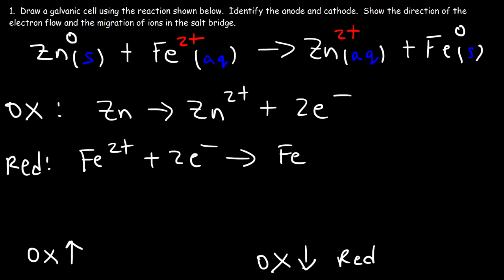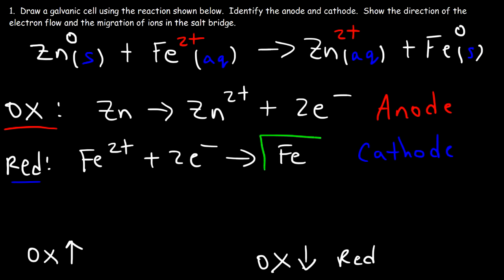The anode is always associated with oxidation and the cathode is always associated with reduction. So the iron electrode is the cathode and the zinc electrode is the anode. With this information we can now draw the galvanic cell.